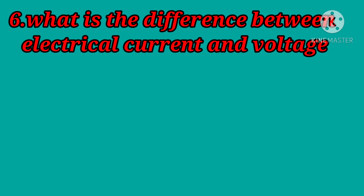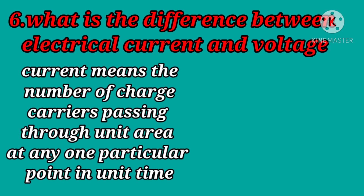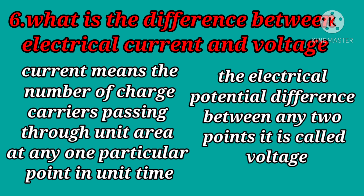What is the difference between electrical current and voltage? Current means the number of charge carriers passing through unit area at any particular time. And the electrical potential difference between any two points is called voltage.